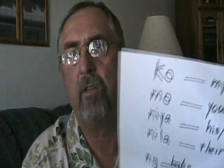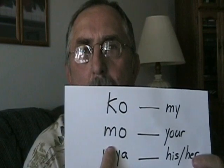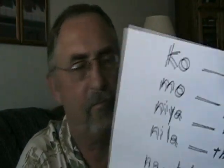In Tagalog, these possessive words are: ko, meaning my — you would say 'pangalan ko, Bud Brown,' meaning my name is Bud Brown. Mo is for you. Nga could be he or she — 'pangalan nga si Mary,' 'pangalan nga si Jojo.' So nga can mean him or her; there's no differentiation in Tagalog. And for them, you use nila.